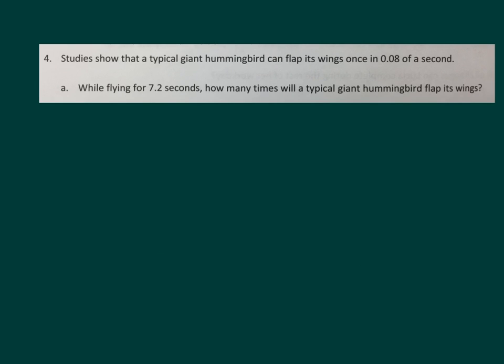Studies show that a typical giant hummingbird can flap its wings once in 0.08 of a second. While flying for 7.2 seconds, how many times will a typical giant hummingbird flap its wings? So we're going to take 7.2 and divide it by 0.08. Let's write that out as a fraction. 7.2 over 0.08. Let's change the denominator to a whole number by multiplying by 100 over 100. 7.2 times 100 is 720. 0.08 times 100 is 8. So we have 720 over 8.